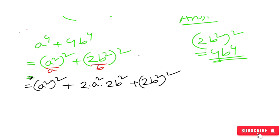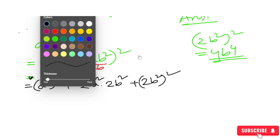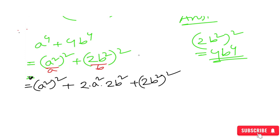If we have 2ab to x, then we can get 1. If we have a to x to x, then we can get 2a squared into 2b squared.